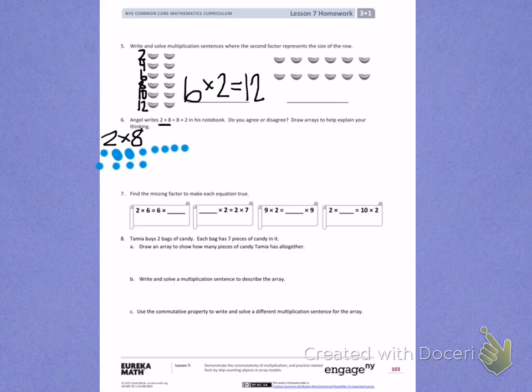1, 2, 3, 4, 5, 6, 7, 8. There's a second row of 8.